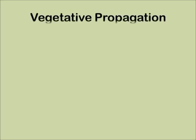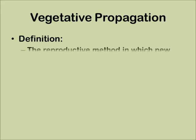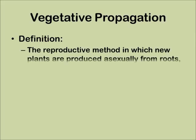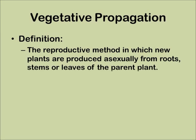Vegetative propagation is the reproductive method in which new plants are produced essentially from roots, stems, or leaves of the parent plant.